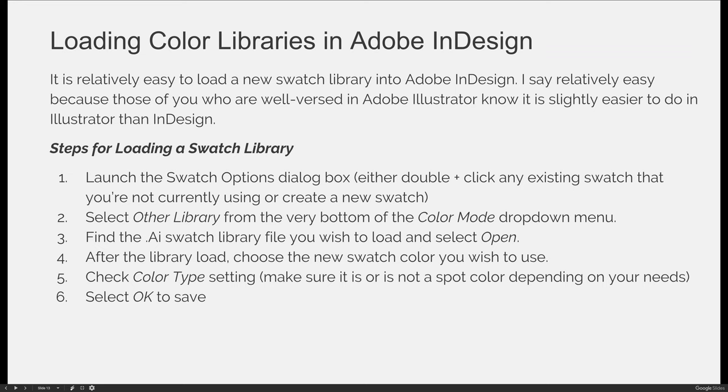Once inside the swatch options dialog box, select the color mode drop-down menu where you'd normally choose RGB, CMYK, or any of the Pantone libraries. At the very bottom there's an option that says 'Other Library,' which opens an open dialog box. You can search through your computer to find your .ai swatch library file, and when you select Open it will automatically load into your system and remain there until you reset the program defaults.